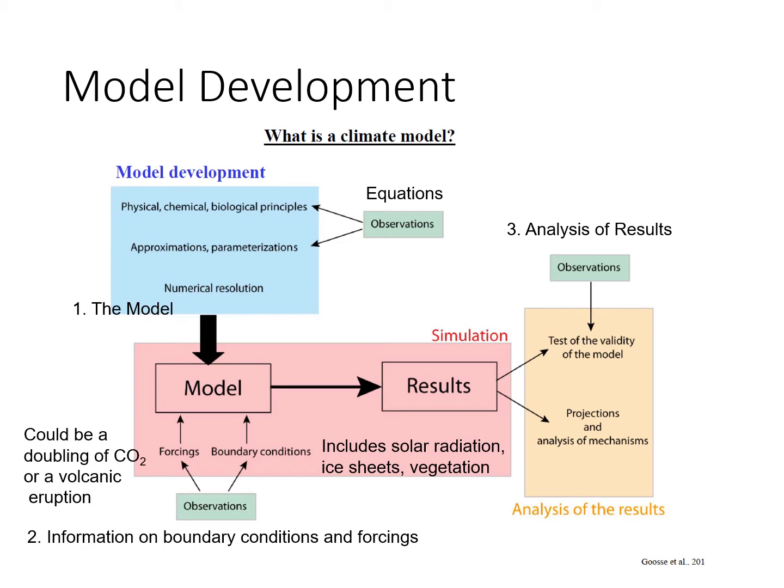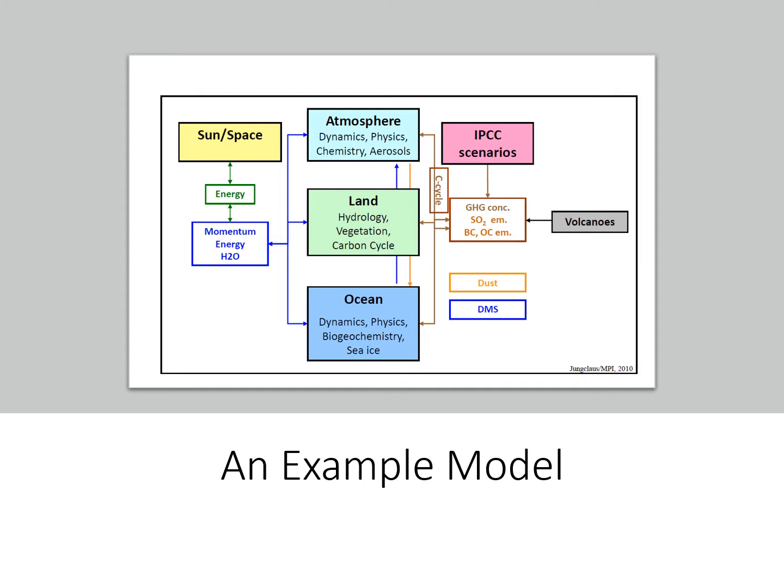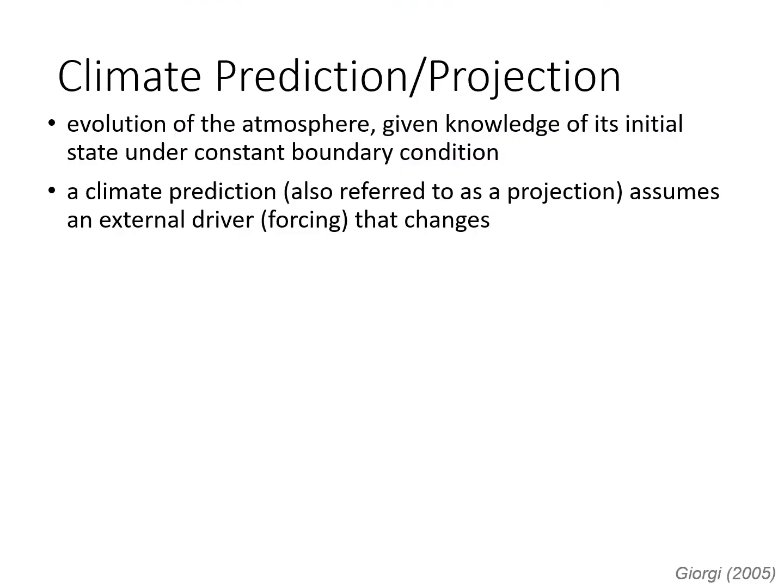Third, climate models produce results which require analysis. This is an example of a climate model, to give you a sense of everything that scientists must consider in the development of the model. The climate prediction is an estimate of the evolution of the atmosphere, or the climate condition, under constant boundary conditions, and given a particular initial state.